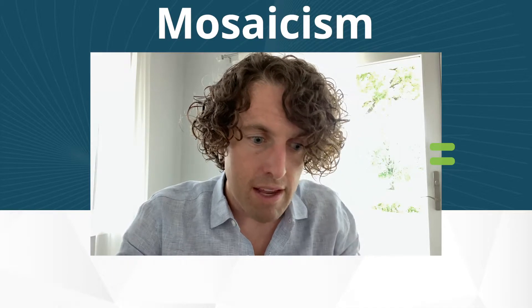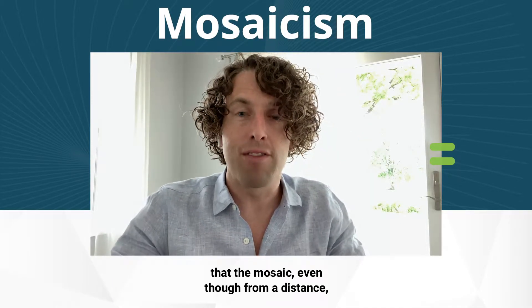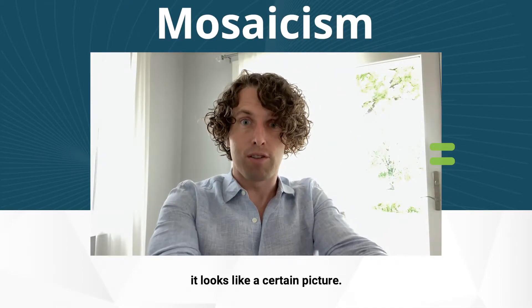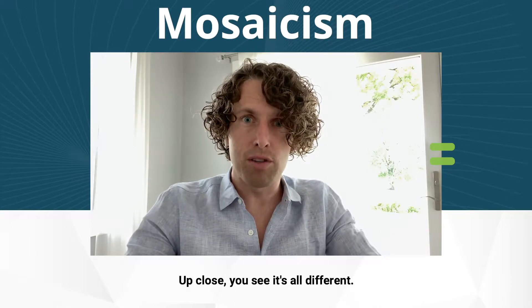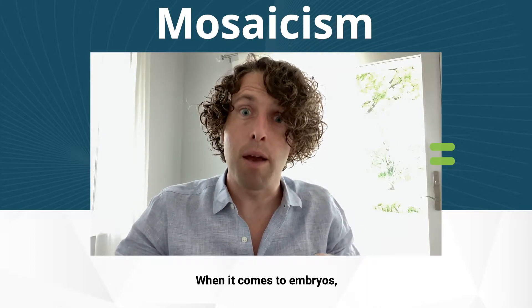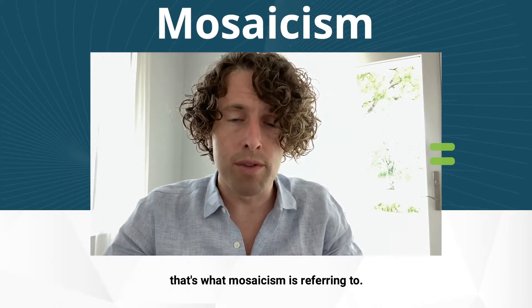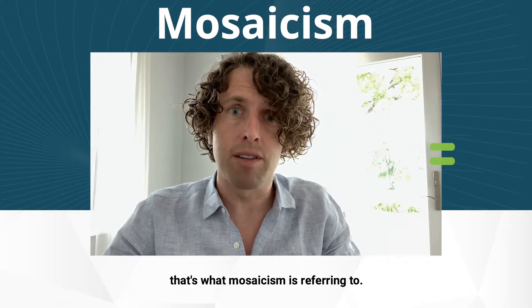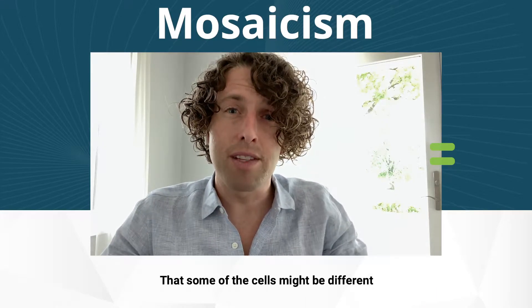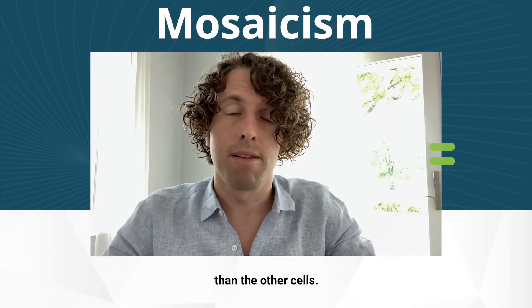And then the same with the yellow tiles — the mosaic, even though from a distance it looks like a certain picture, up close you see it's all different. When it comes to embryos, that's what mosaicism is referring to: that some of the cells might be different than the other cells.